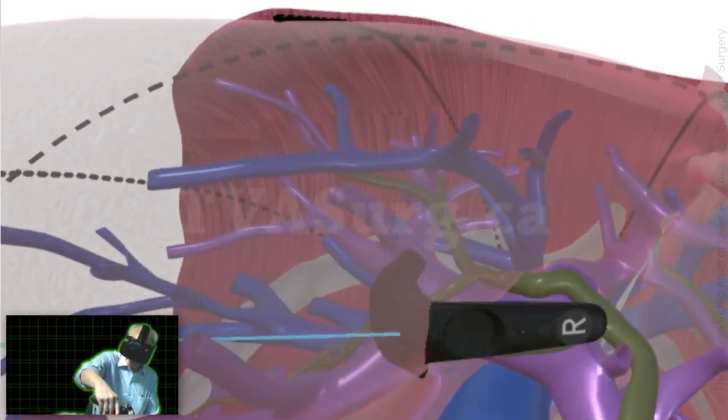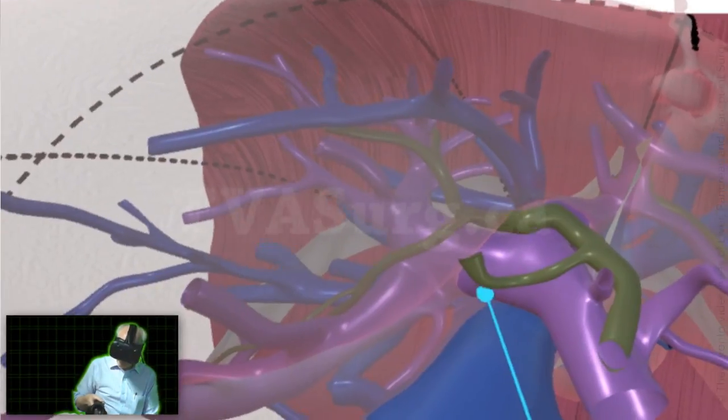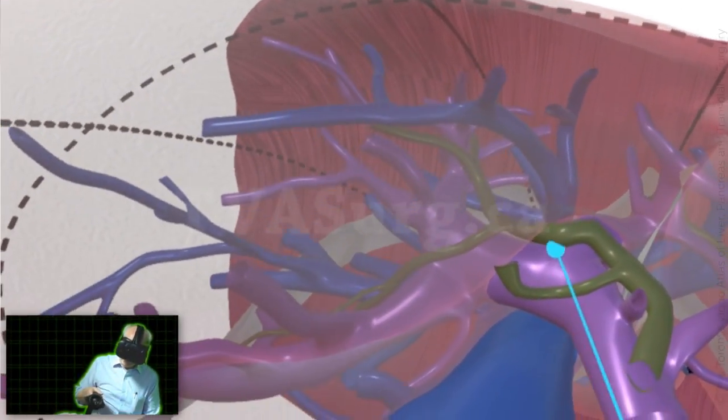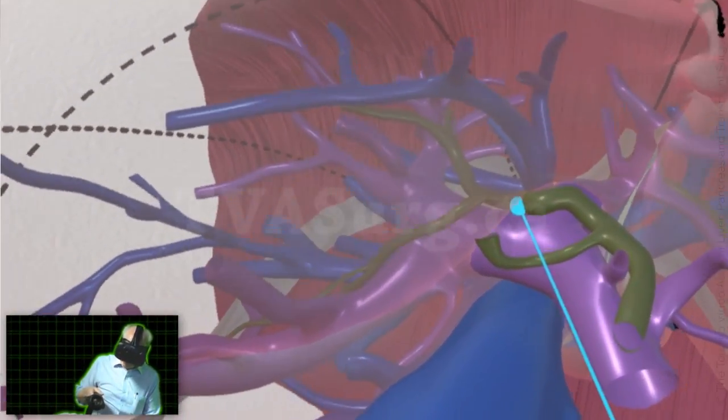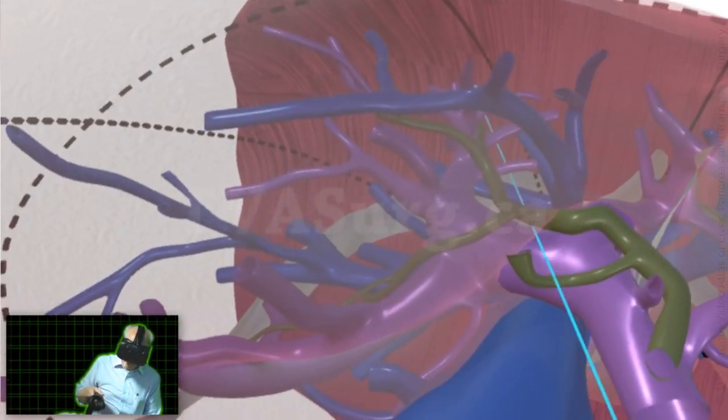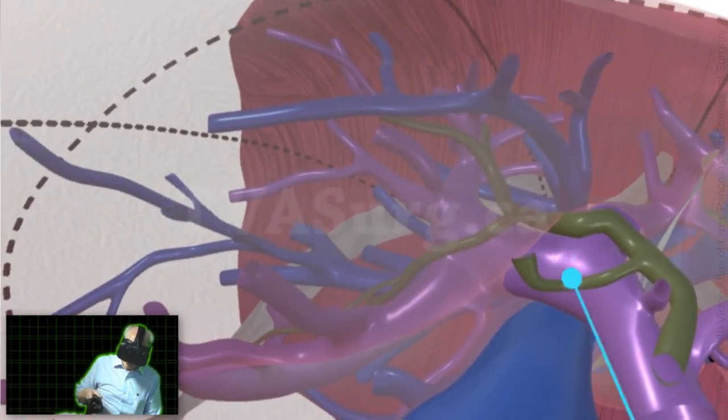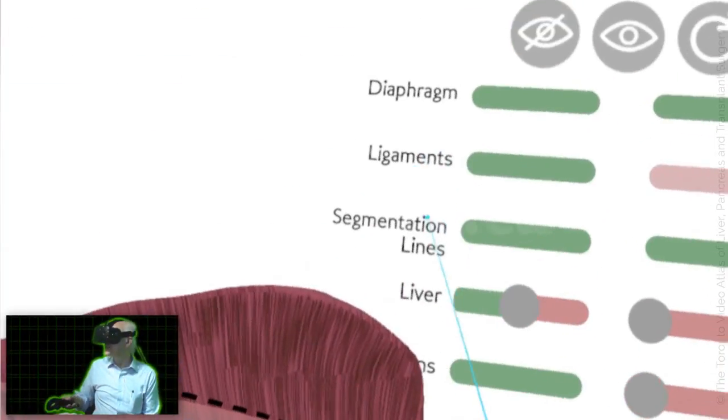You got the cystic duct out of the way there. And so, one begins one's incision just on the portal side of this reflection to identify the portal vein. Now, I want to talk about the portal vein.